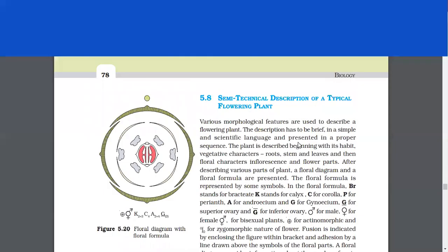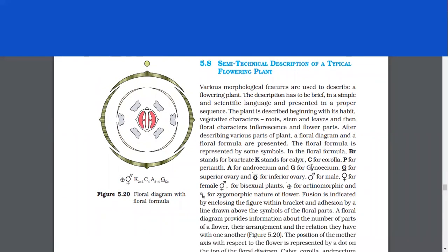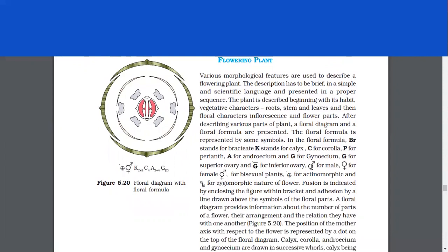Semitechnical description of a typical flowering plant. Various morphological features are used to describe a flowering plant. The description has to be brief in a simple and scientific language and presented in a proper sequence. The plant is described beginning with its habit and vegetative characters, roots, stems and leaves and then floral characters inflorescence and flower parts. After describing various parts of a flower or plant, a floral diagram and a floral formula are presented.